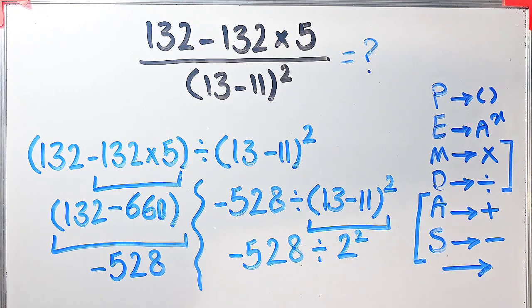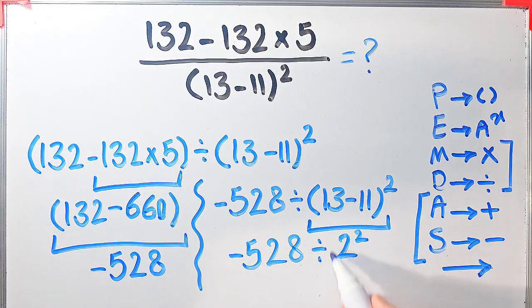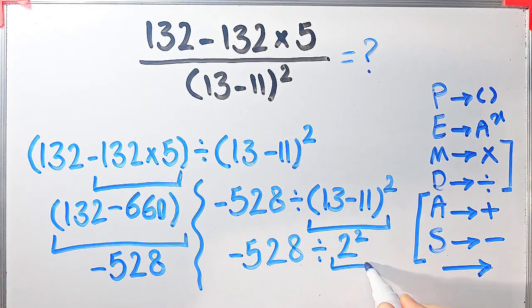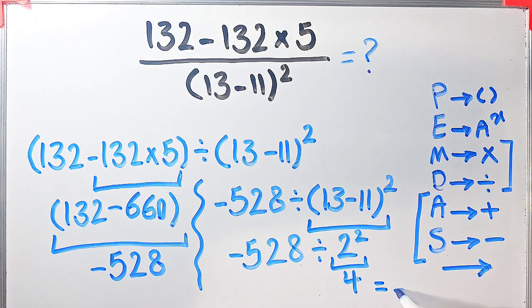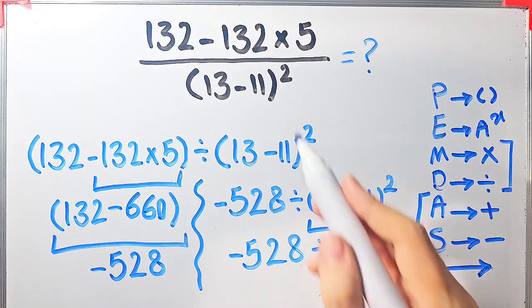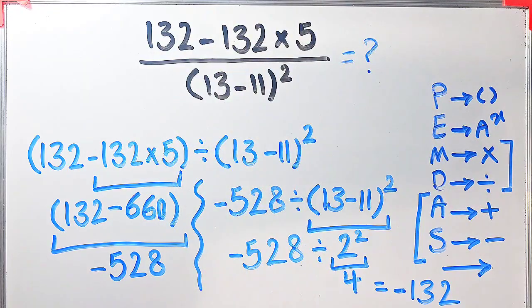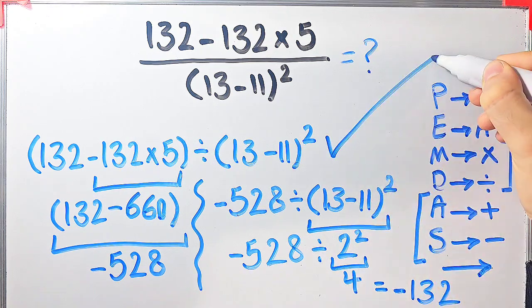Now the question is negative 528 divided by 2 to the power of 2. 2 to the power of 2 equals 4, so now the question is negative 528 divided by 4. Negative 528 divided by 4 equals negative 132. The final answer of this question equals negative 132.